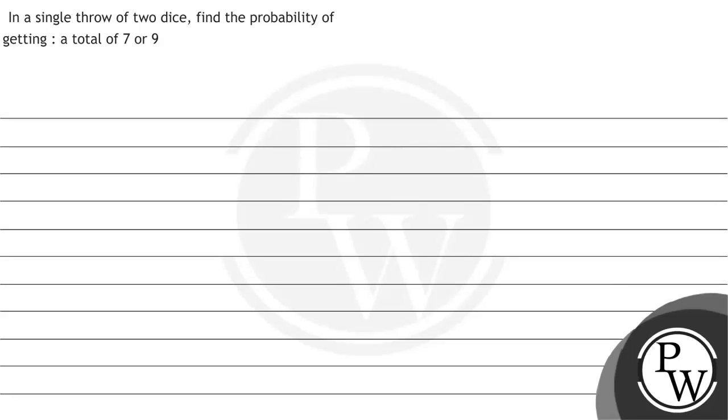Hello, let us see the question. The question says: in a single throw of two dice, find the probability of getting a total of 7 or 9.